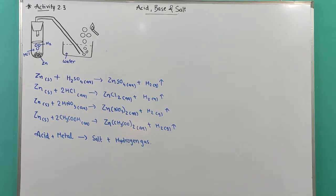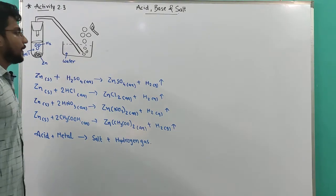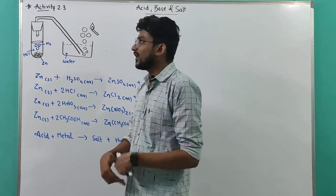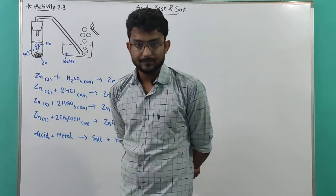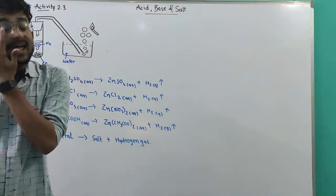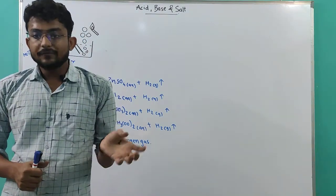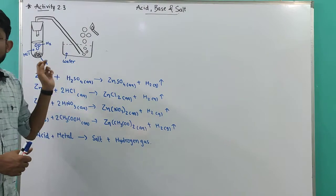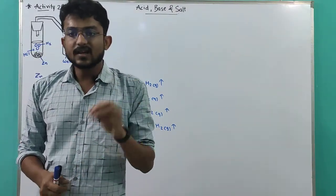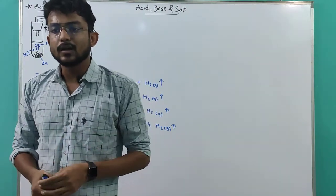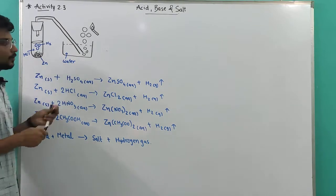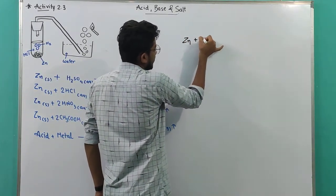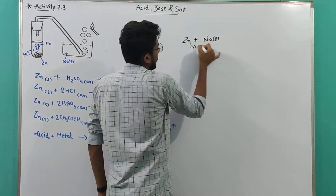Now Activity 2.4: the apparatus stays the same but instead of acid, we add base. Place a few pieces of zinc granules and add about 2 ml of sodium hydroxide solution and warm the container. So instead of HCl, we add NaOH and heat it. We have zinc solid and NaOH aqueous.